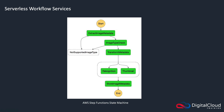Also in application integration, we have workflow services. This example is AWS Step Functions, where you have multiple layers in a state machine and each corresponds to some data being processed. For instance, the workflow starts, you extract metadata from an image, then check the type of the image, transform it, and so on. These are all different components of the application and the data gets processed at different layers.